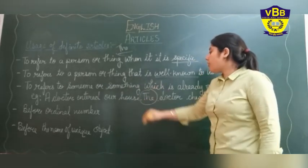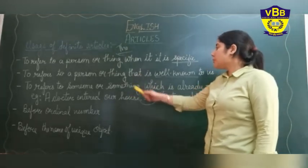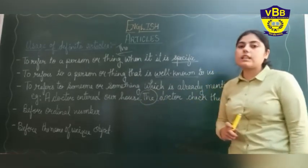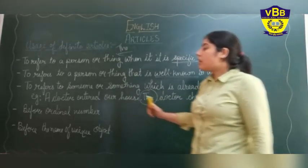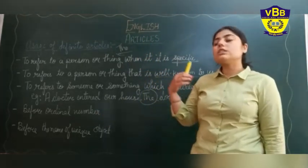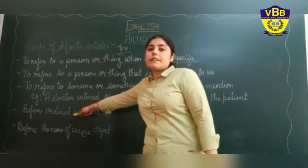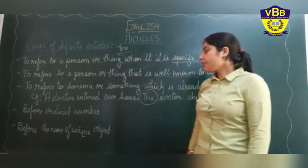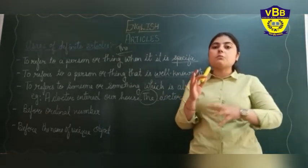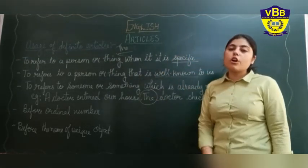In the second sentence, before 'doctor' I put 'the' — because if we are repeating that same person again, we use article 'the'. Then, before ordinal numbers: 'Put the book on the top shelf' — before the ordinal number here I put 'the'. Next, before the name of any unique object — something which is very unique — we use 'the'. So these are the usages of 'the'.